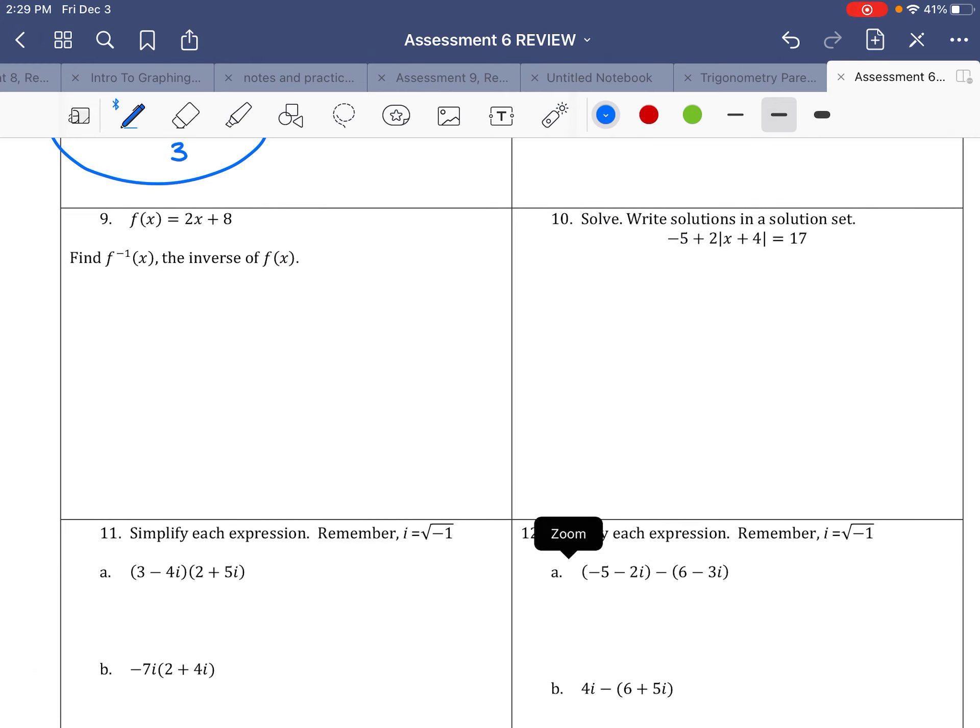Number 9, an old problem, finding the inverse. So remember, this is y equals, so I make it into x equals 2x plus, that would be 2y. I switch the x and the y, so 2y plus 8. Solve for y, so take away 8. So I get x minus 8 equals 2y. Divide everything by 2. So I get 1 half x minus 4 equals y. So my inverse is 1 half x minus 4.